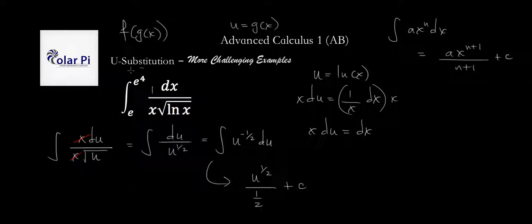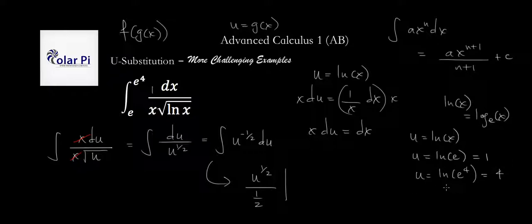But, since we have limits of integration, we're not going to write plus c. We'll just write this evaluated at the two values of u. Now, the two values of u are not e and e to the 4th because u is equal to ln of x. So, this one is going to be u equals ln of e and ln of e is 1. And then the upper limit is going to be u is equal to ln of e to the 4th, which is equal to 4. Remember, ln of x is equal to log base e of x. And that's why ln of e is 1 and ln of e to the 4th is 4.